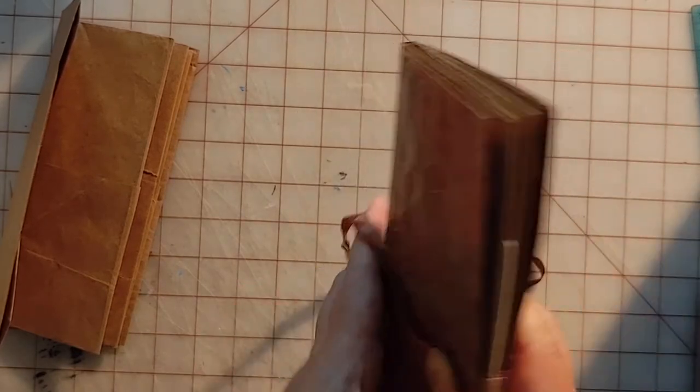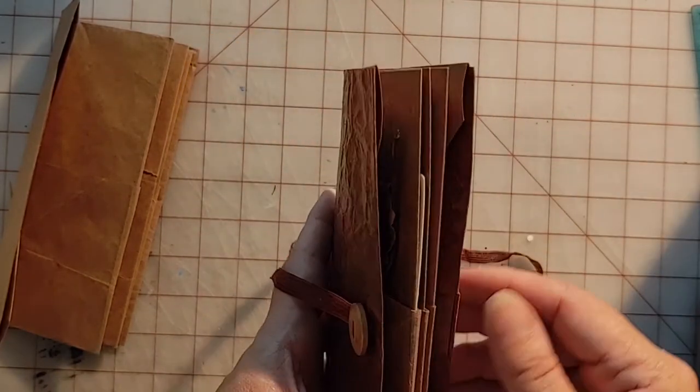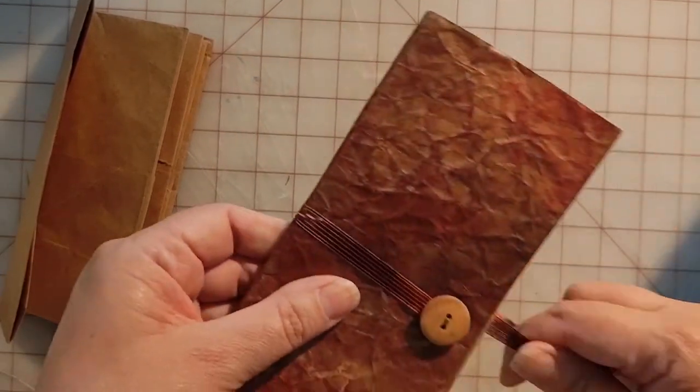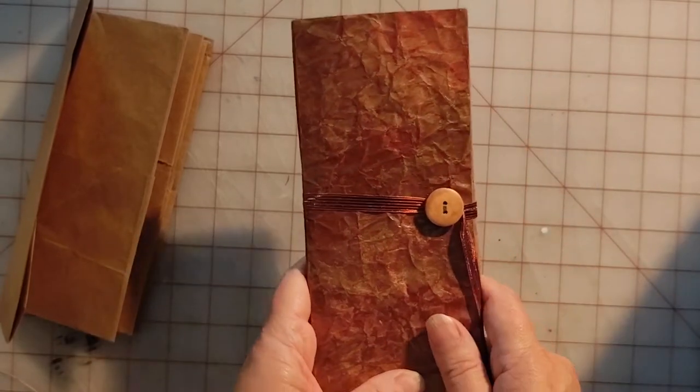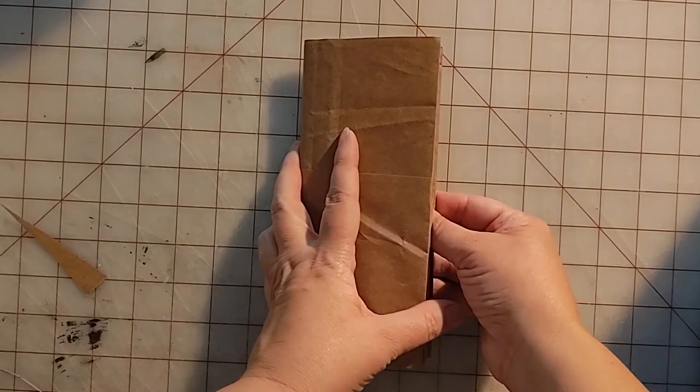The reason I did this was once you start to stuff things into all the pockets, it might be a little hard to keep the book closed. After all, we did just start with a grocery bag. But the other option is to add a little tab. So I'm going to show you how to do that if you'd like to.